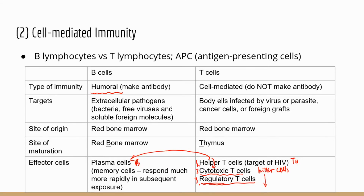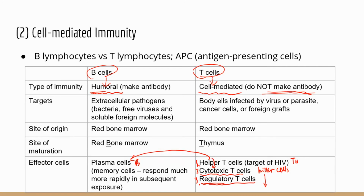So those are the three types of T cells. I made a table to compare the differences between B cells and T cells. The adaptive system divides into humoral and cell-mediated immunity. B cells are involved in humoral immunity, while T cells are involved in cell-mediated immunity. In cell-mediated immunity there is no antibody — instead, cells directly attack the targets.